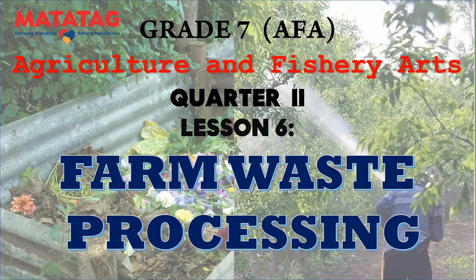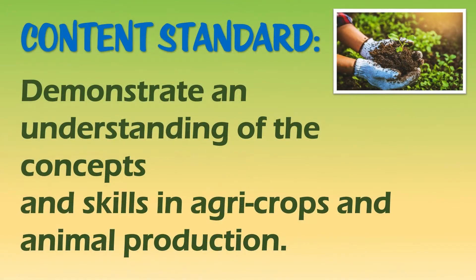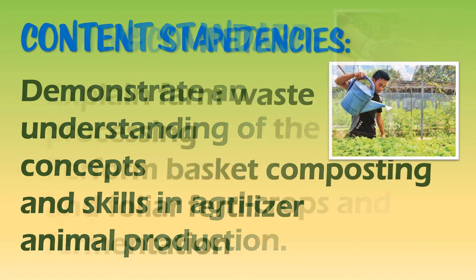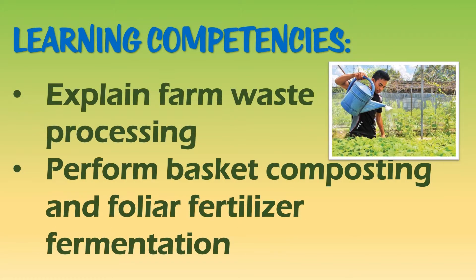Grade 7 Agriculture and Fishery Arts, Quarter 2, Lesson 6: Farm Waste Processing. Agri crops and animal production focus on sustainable farming practices to grow crops and manage livestock effectively, ensuring food security and environmental care. The learning competencies for this lesson are to explain farm waste processing and perform basket composting and foliar fertilizer fermentation.